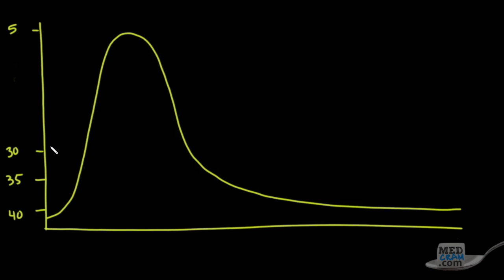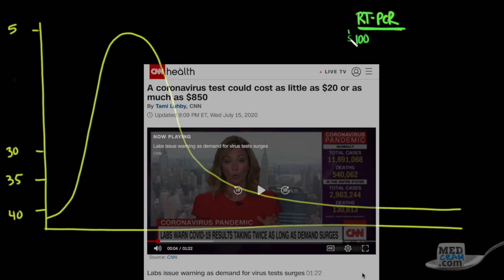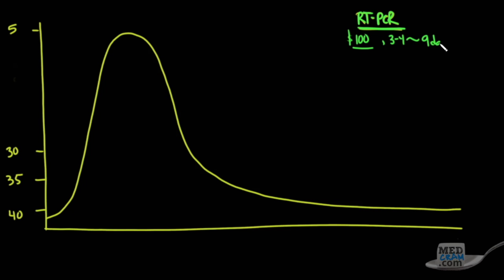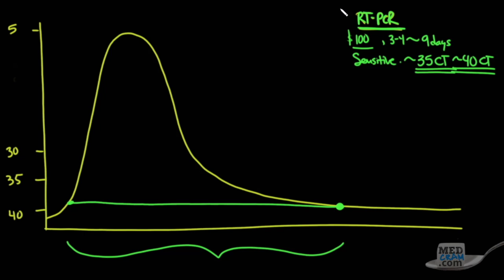What we have right now is reverse transcriptase PCR, RT-PCR. Real-time PCR or reverse transcriptase PCR is pretty expensive, the gold standard stuff. It's about $100 a test. Right now we're experiencing pretty long turnaround times, anywhere from three to four days, all the way up to nine days to get that test back. There's not that many of them, but it's very sensitive. Let's say it's around 35 CT values, or even as low as 40. That means we're able to detect using RT-PCR all the way out to here. All of these patients would test positive on this test.